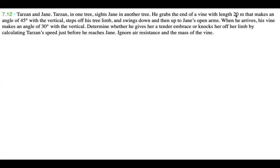This problem is titled 'Tarzan and Jane.' Tarzan is on one tree and spots Jane on another tree. He grabs the end of a vine with length 20 meters that makes an angle of 45 degrees with the vertical, steps off his tree limb, swings down and then up to Jane's open arms. When he arrives, his vine makes an angle of 30 degrees with the vertical. We need to determine whether he gives her a tender embrace or knocks her off her limb by calculating Tarzan's speed just before he reaches Jane, ignoring air resistance and the mass of the vine.